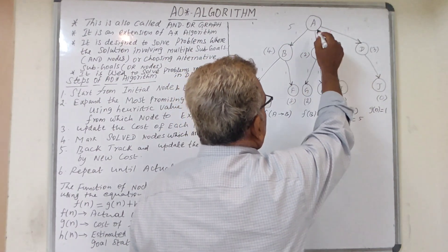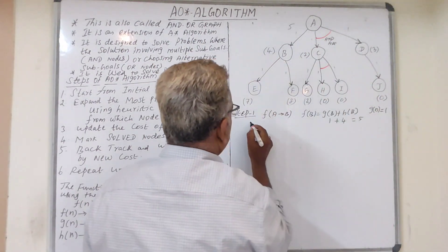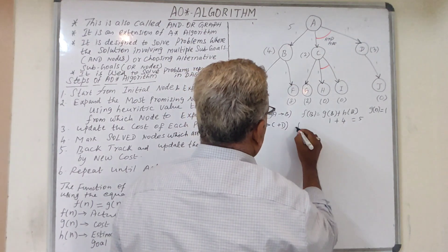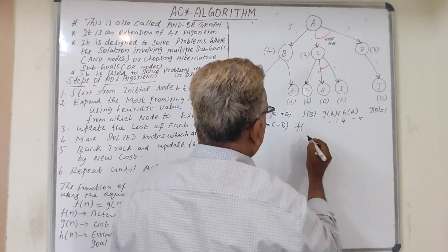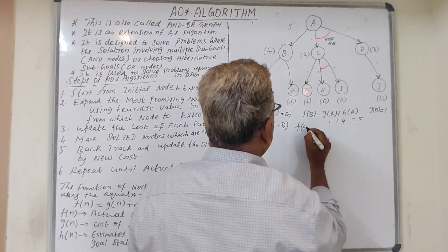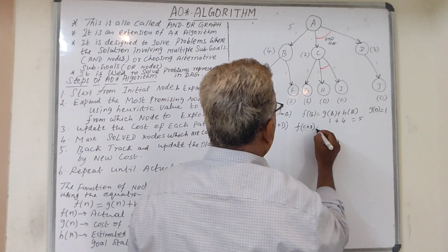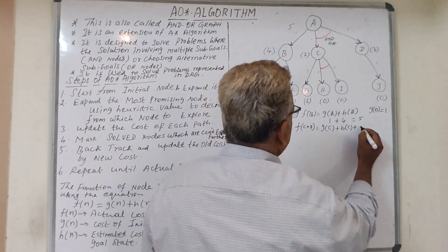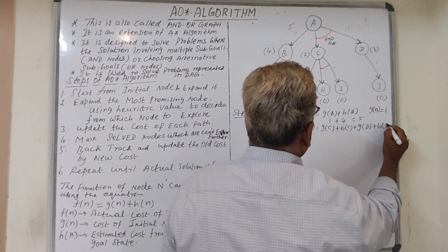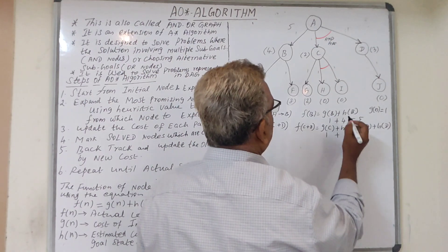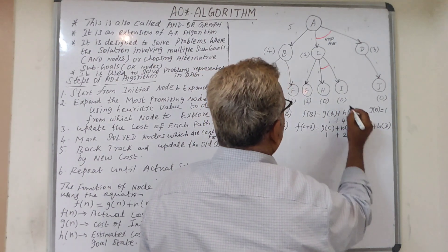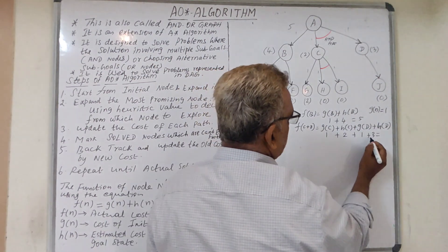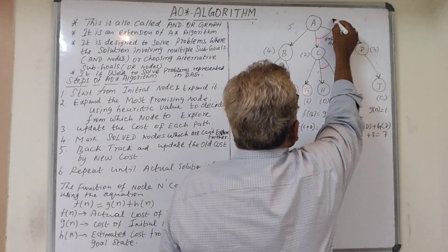Now we move on to the next path: A to C+D. The function for this path can be calculated as f(C+D) = g(C) + h(C) + g(D) + h(D). So g(C) = 1 and h(C) = 2, then g(D) = 1 and h(D) = 3, giving us 1+2+1+3 = 7. So the cost of path A to C+D is 7.